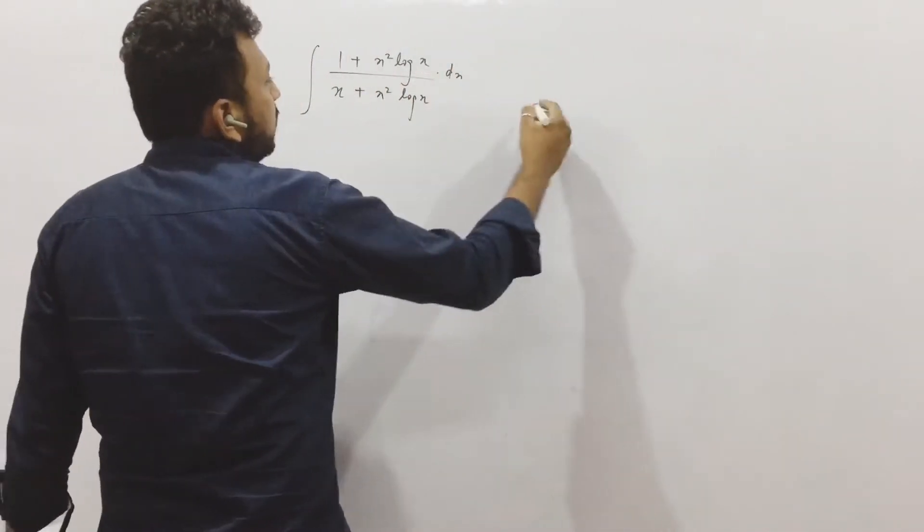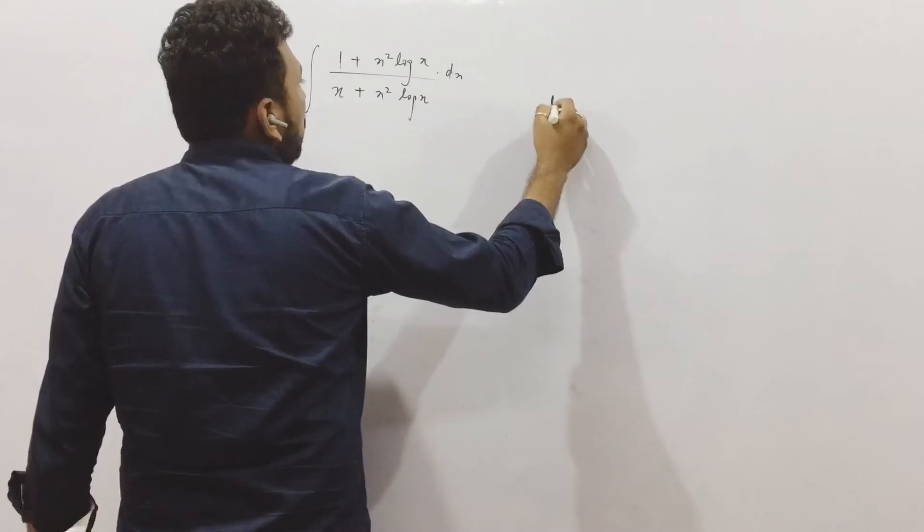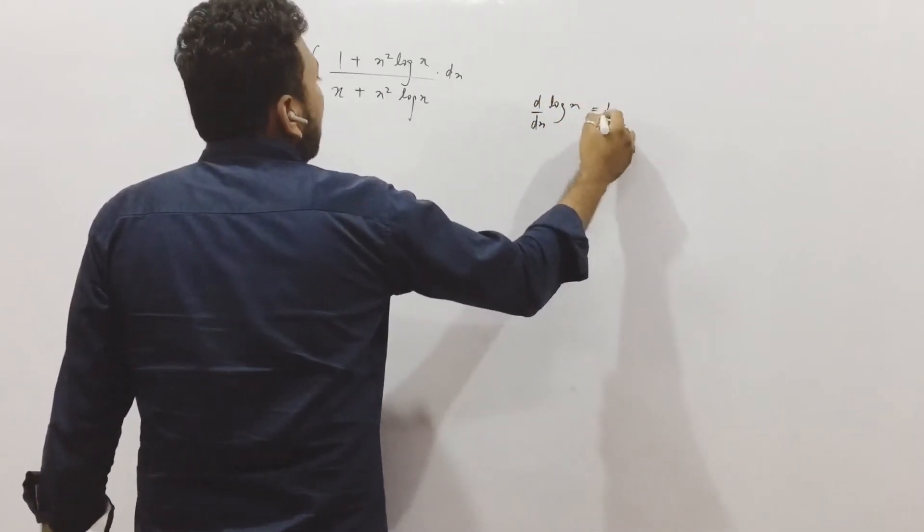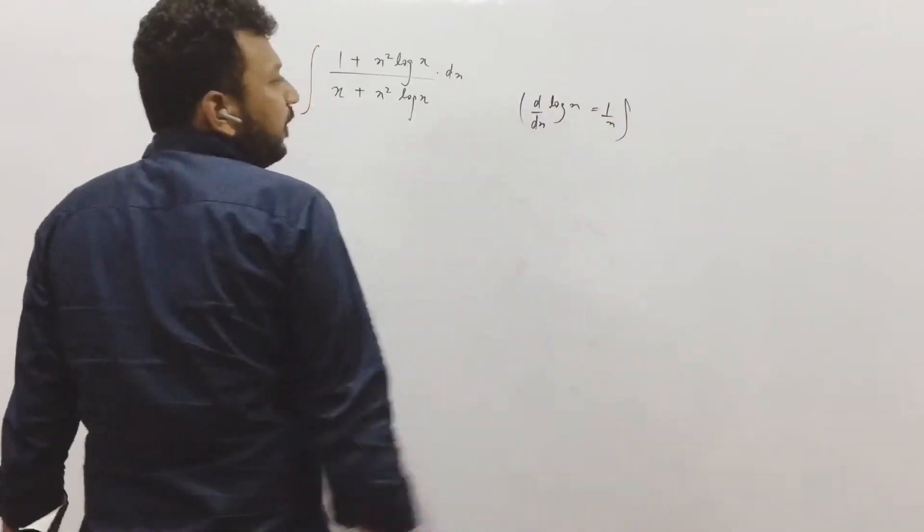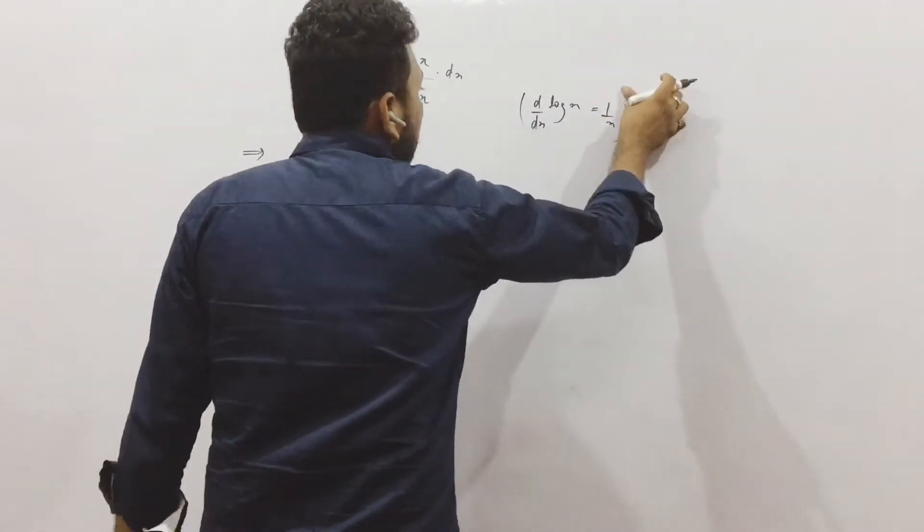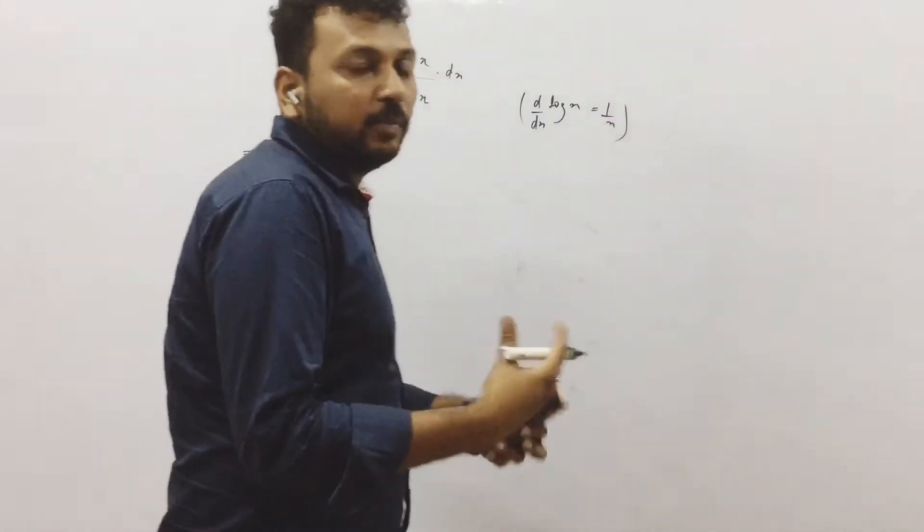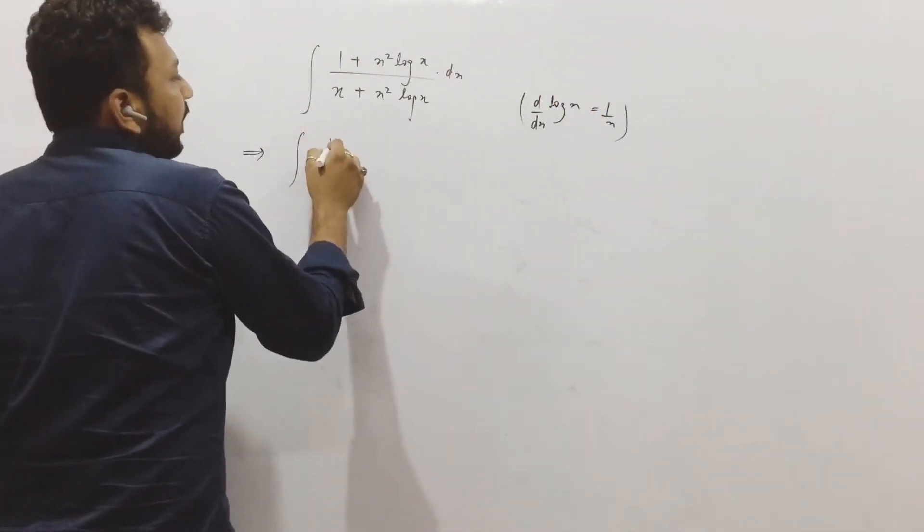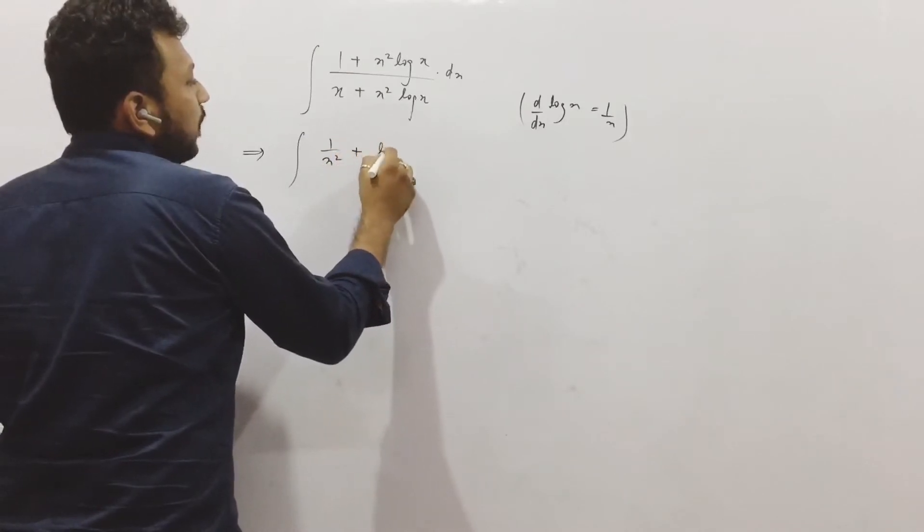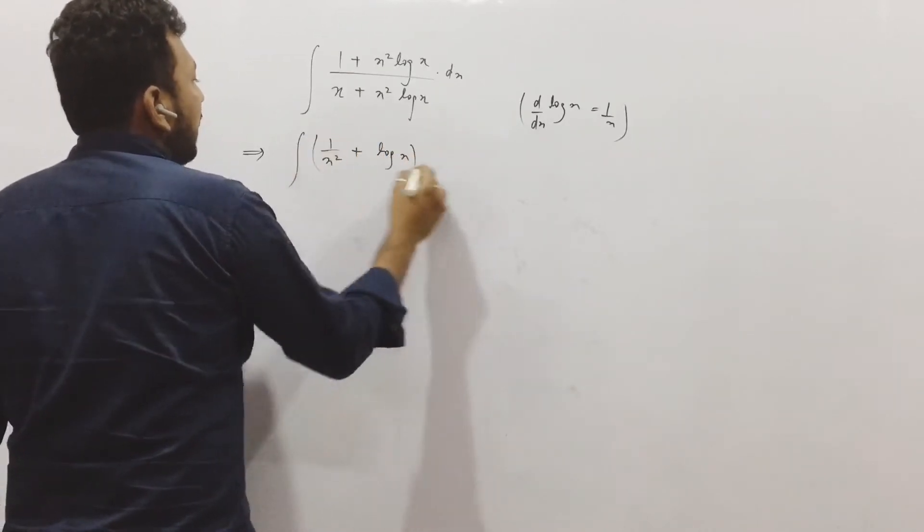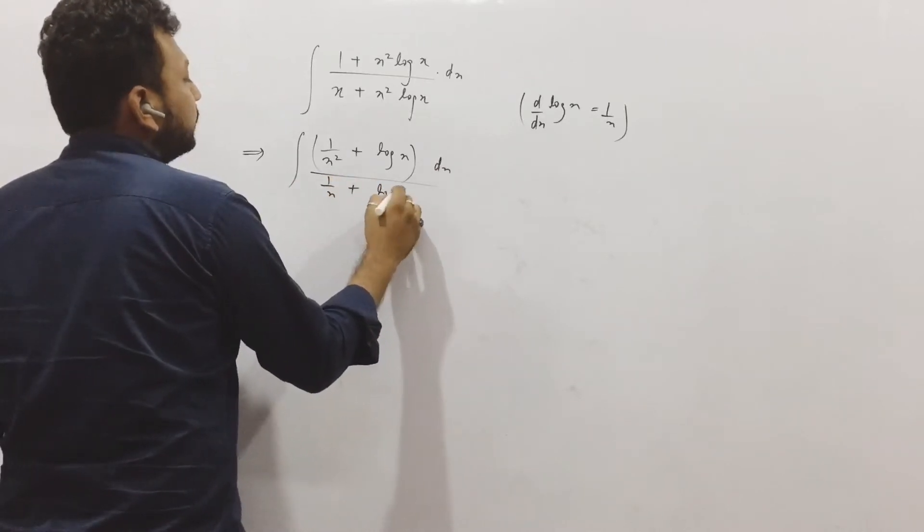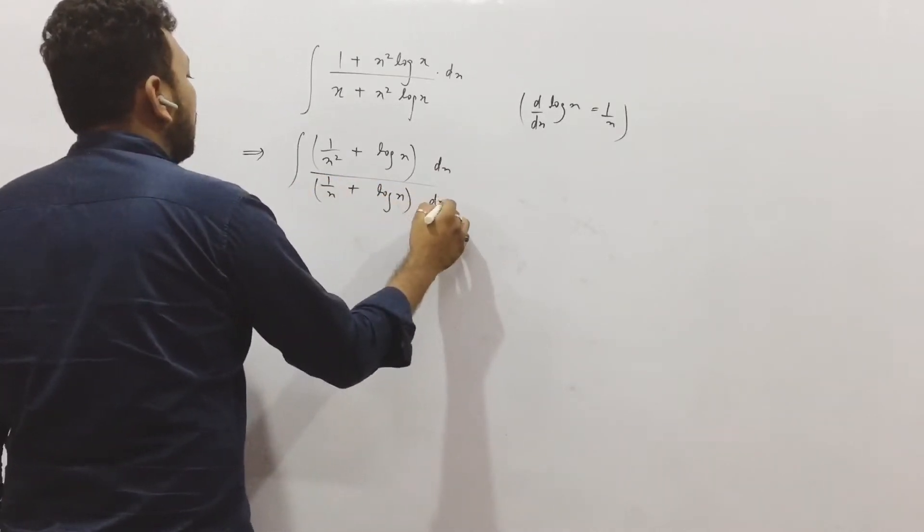First of all understand that we need to put things in such way that we have something like this. We know the derivative of log x is 1 by x, so we need to convert the expressions so that we can find something like this. First of all what I will do is we have to divide the expression by x. So this is what I will have right, 1 by x plus log x.